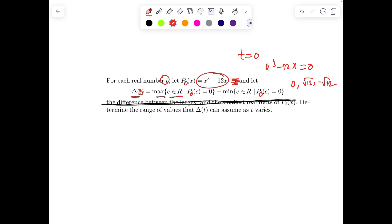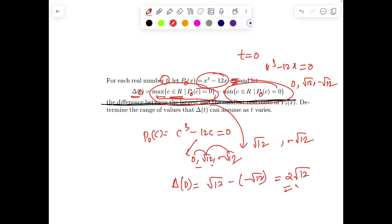So P₀(x) is a polynomial x³ - 12x and it is having three roots: 0, √12, and -√12. Now clearly, what is max{c ∈ ℝ: P₀(c) = 0}? If I make P₀(c) = 0, it will give three values: 0, √12, and -√12. So the first expression tells maximum as c is changing. The maximum will be taken as √12. Second is P₀(c) = 0 is giving three values and out of that we have to take minimum, which is -√12. So the expression Δ(0) is √12 minus (-√12), which is giving me 2√12 or 4√3. So this is corresponding to t = 0.